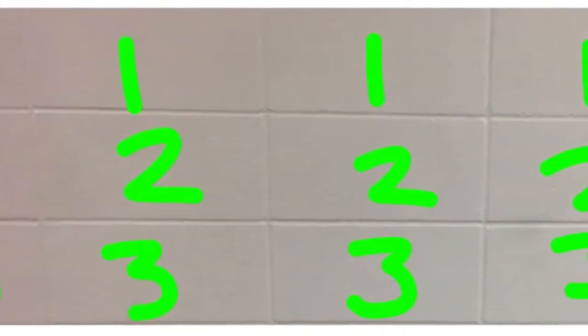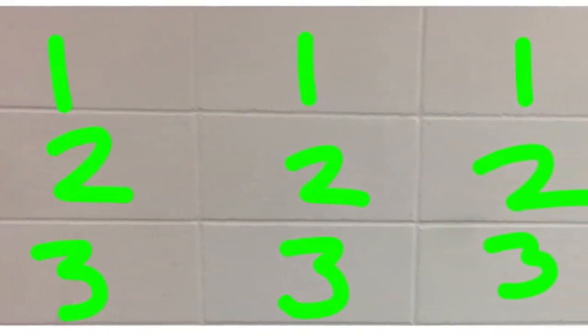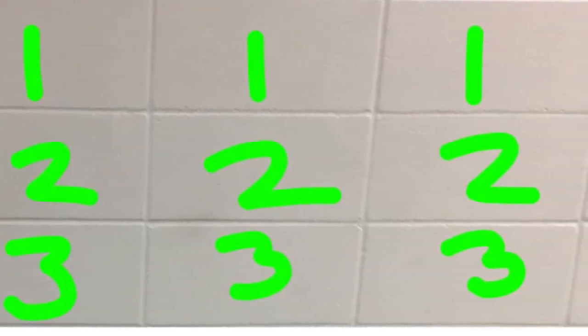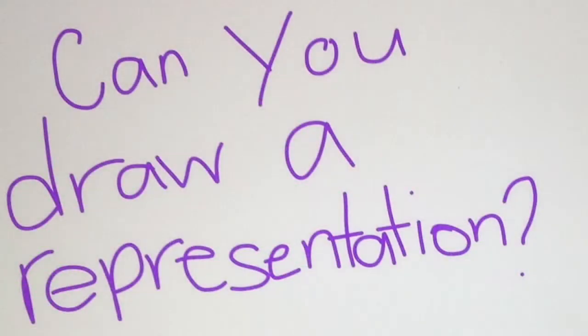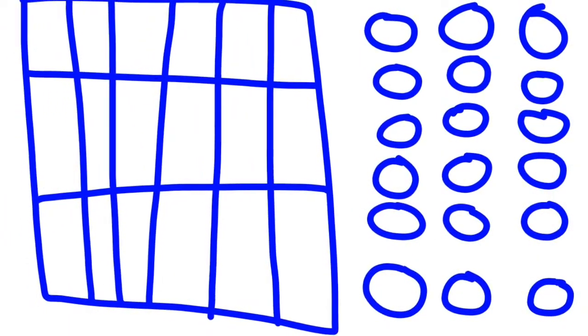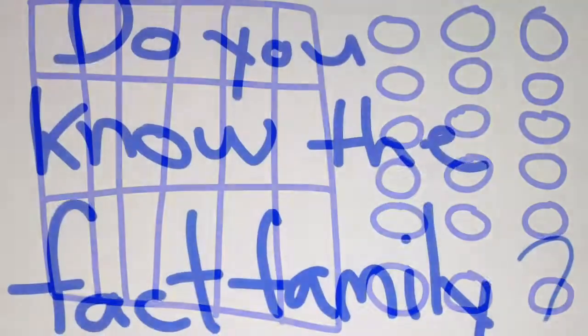This is three groups of six. Can you see three groups of six? Can you draw a representation? This is three groups of six.